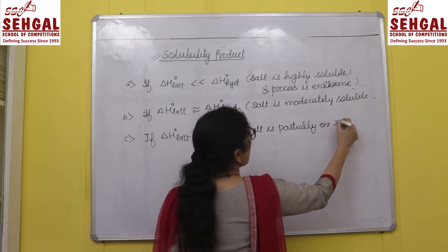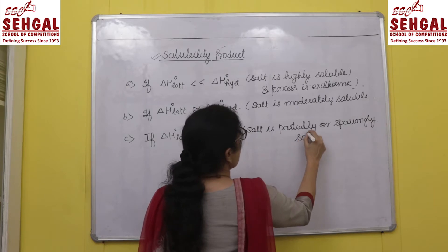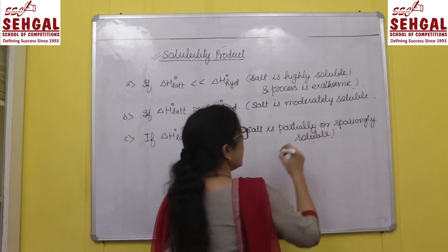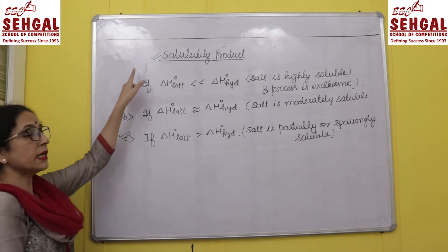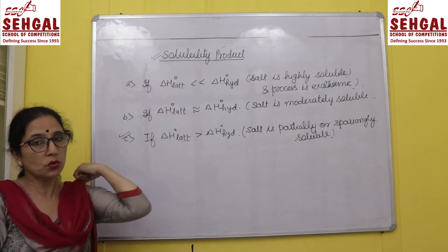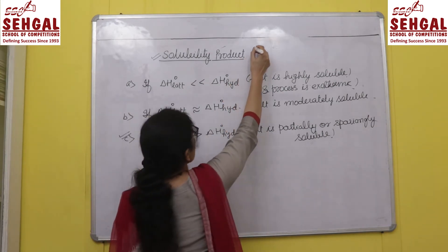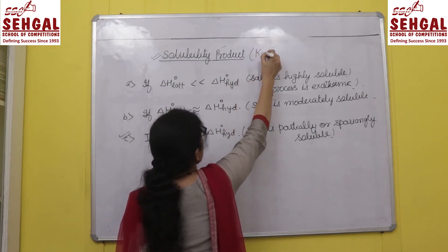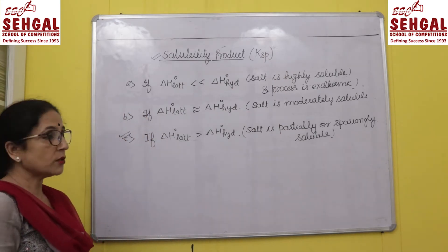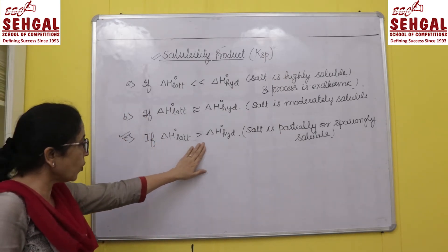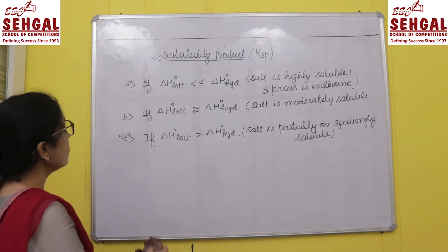Now you can connect: it is this third case — sparingly soluble salts — where we need to study solubility product. This property is shown with the symbol K_sp, where 'sp' depicts the solubility product. So keep in mind that the concept of K_sp is applicable only here, for sparingly soluble salts.